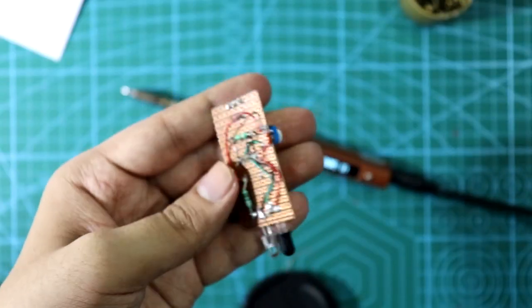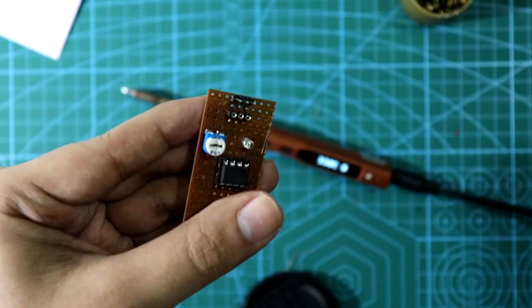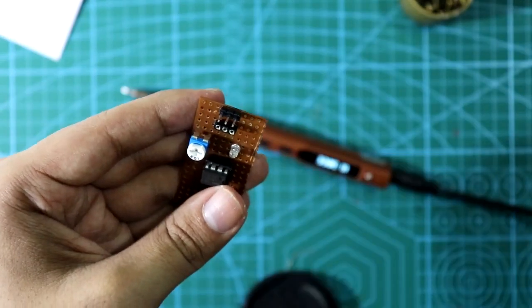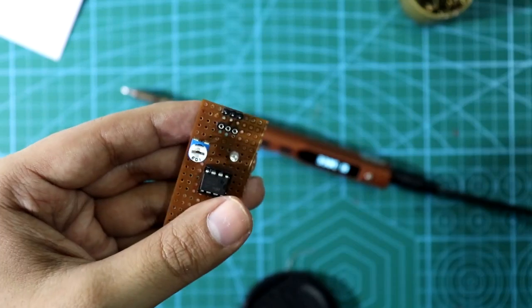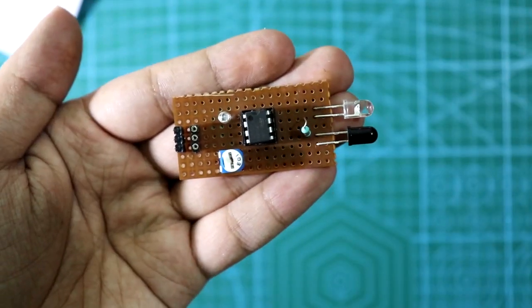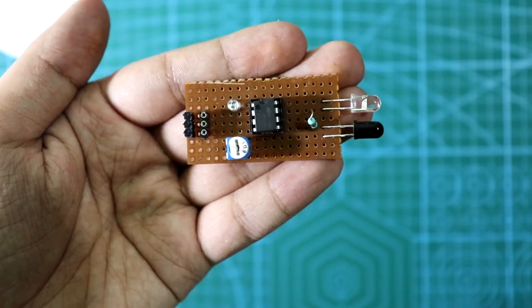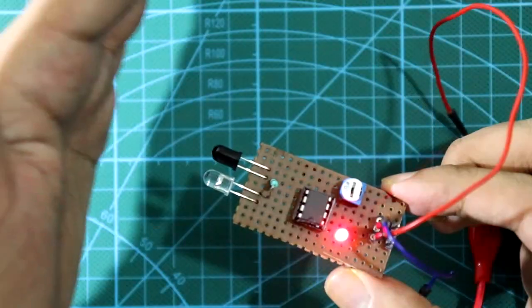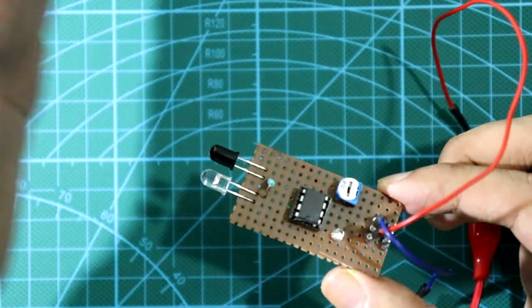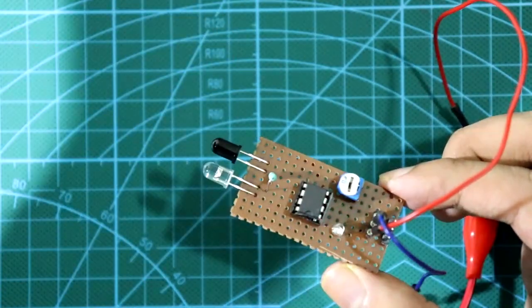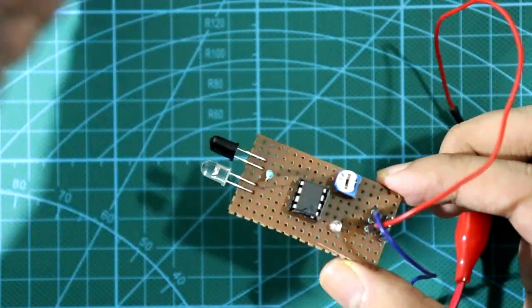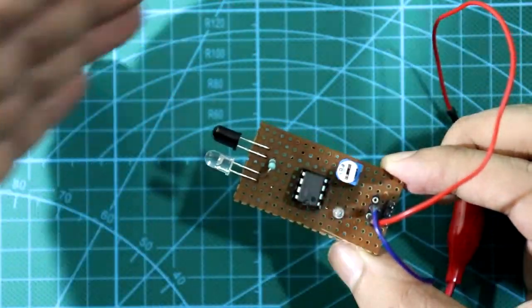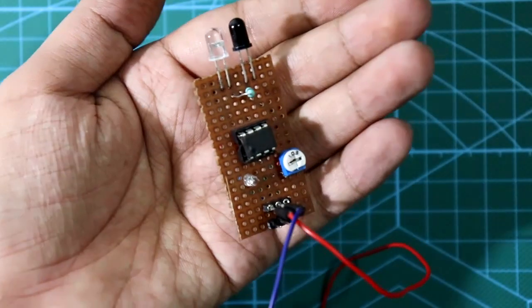After completing the circuit I have also added one female header and male header, so that we can connect to external circuit or breadboard. So this is how we can make homemade proximity sensor. Let's check it whether it works or not. Yes, it's working.